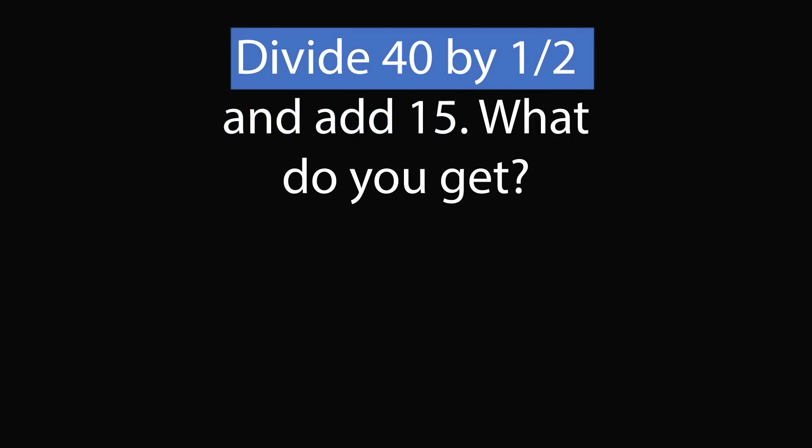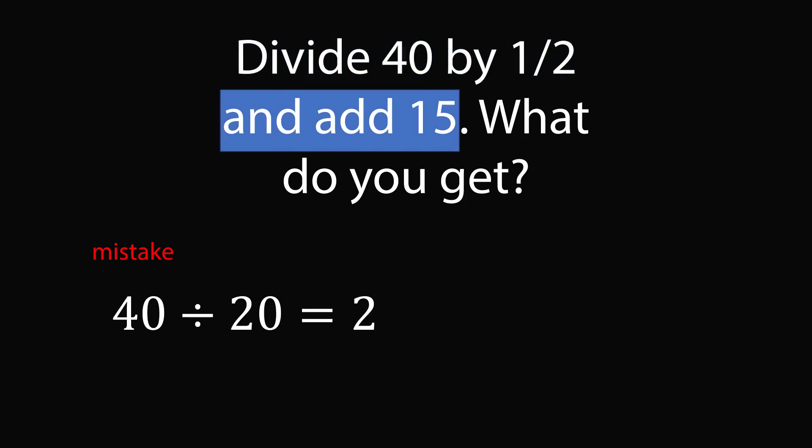Here's another answer that I saw online. The person interpreted the question as divide 40 by 1 half of itself. So I would say this is a mistake, but here's how this would go. So what is 1 half of 40? That would be 20. So divide 40 by 1 half of itself would mean to take 40 divided by 20, you get the answer of 2, and then you add 15, and that gives you the result of 17.